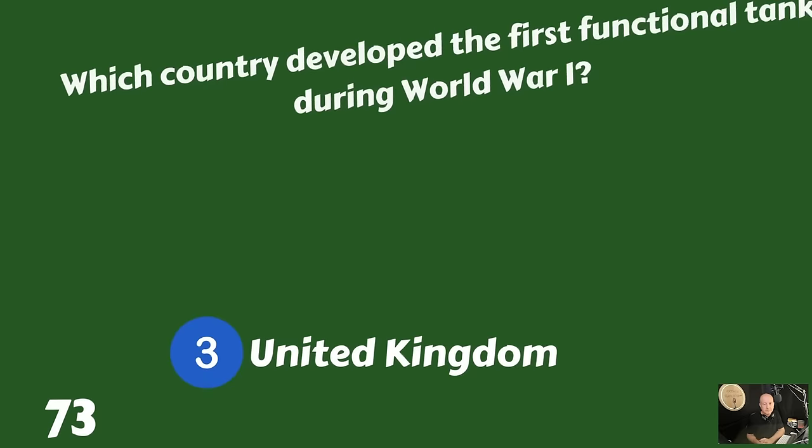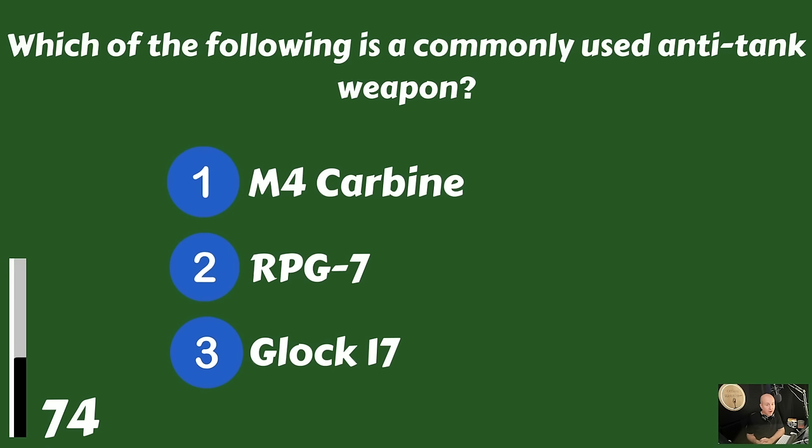Which of the following is a commonly used anti-tank weapon? The M4 carbine, the RPG-7, or is it the Glock 17? The commonly used anti-tank weapon is the RPG-7.